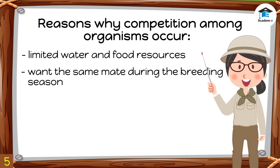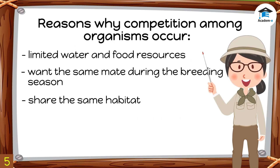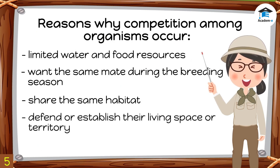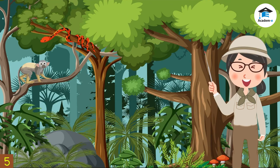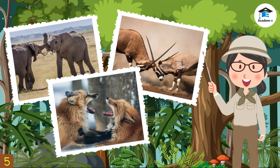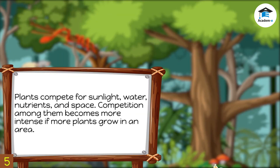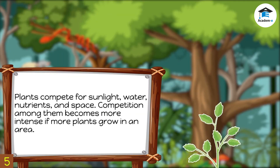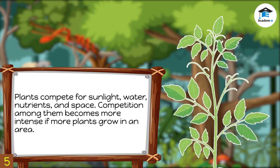Competition among animals happens for the following reasons: they have limited water and food resources, they want the same mate during the breeding season, they share the same habitat, and they try to defend or establish their living space or territory. When competing, the stronger animal wins and the weaker one gets killed or chased. For example, plants compete for sunlight, water, nutrients, and space, and competition among them becomes more intense if more plants grow in an area.